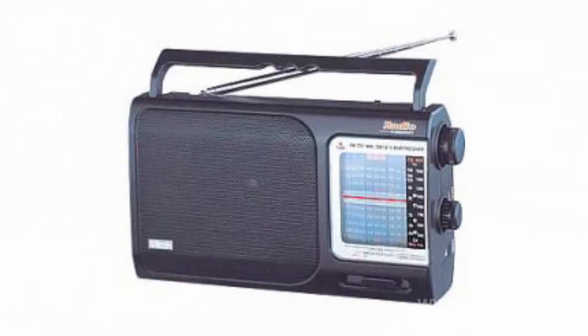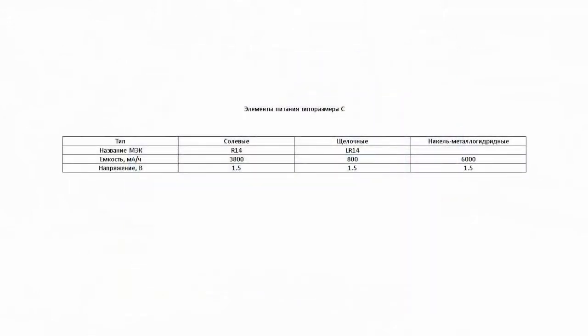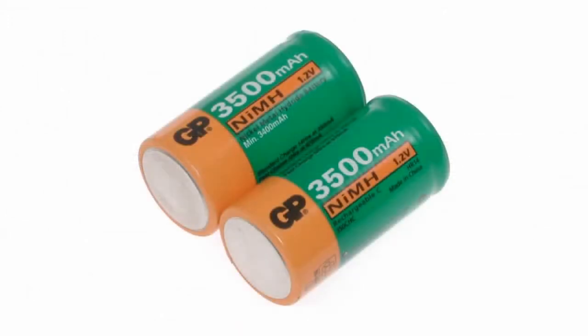Depending on the chemical composition, they are divided into three groups with IEC names: R14 for saline cells and LR14 for alkaline cells. They are also distinguished by capacity. At present, they are widely used in technical devices and are also available for sale.